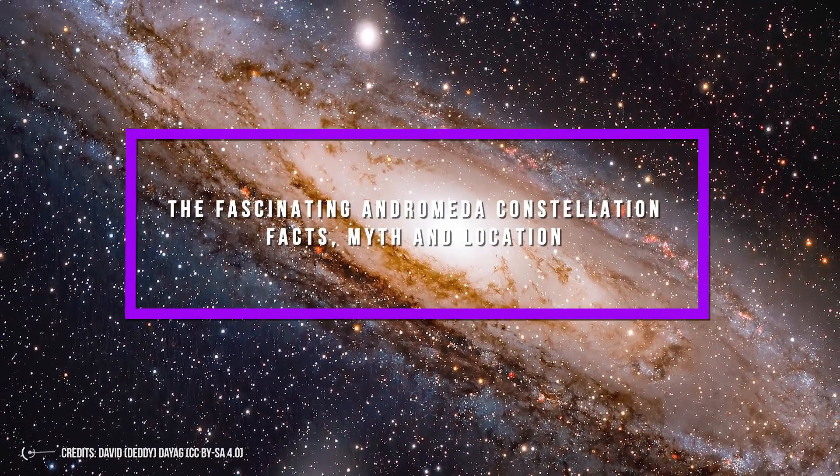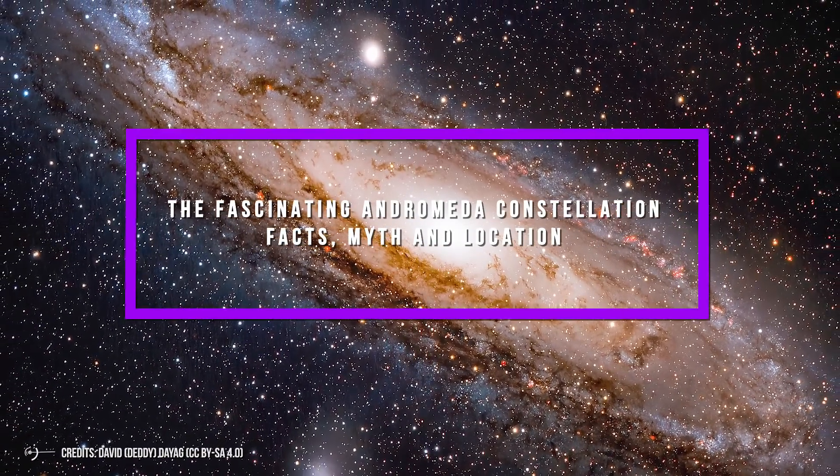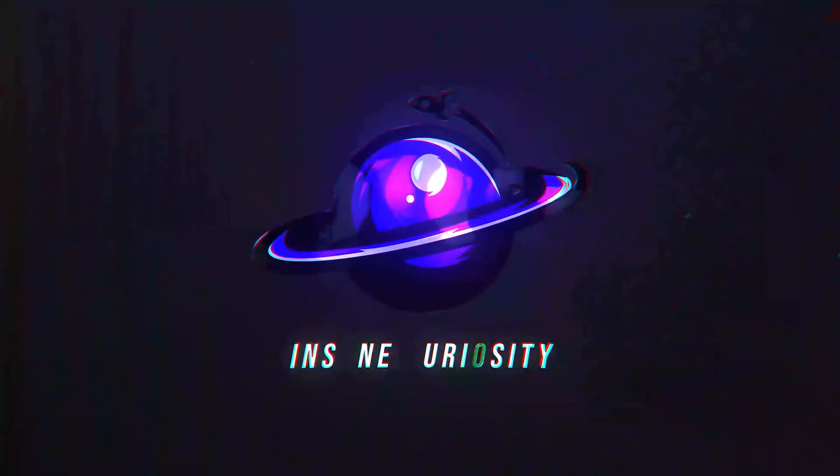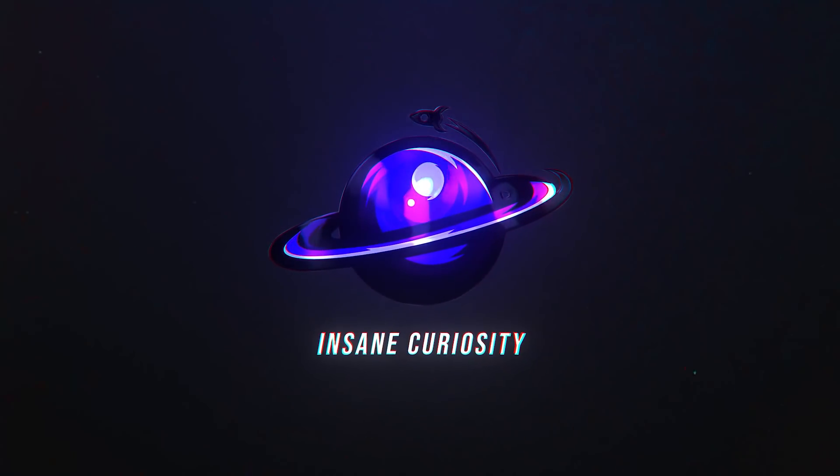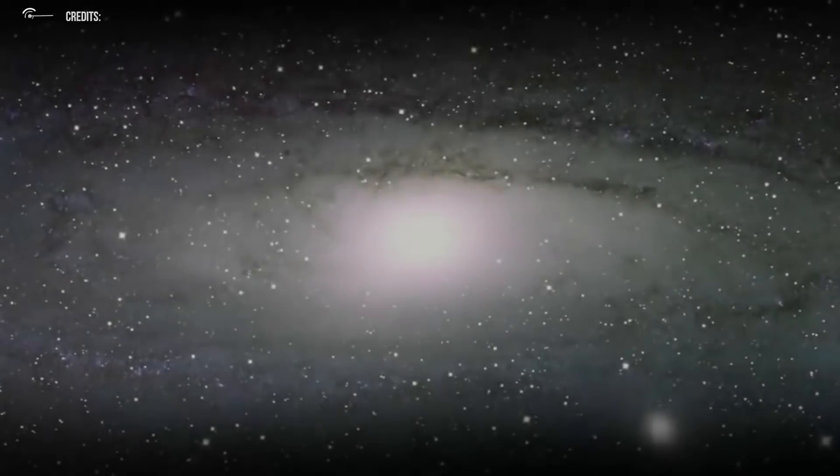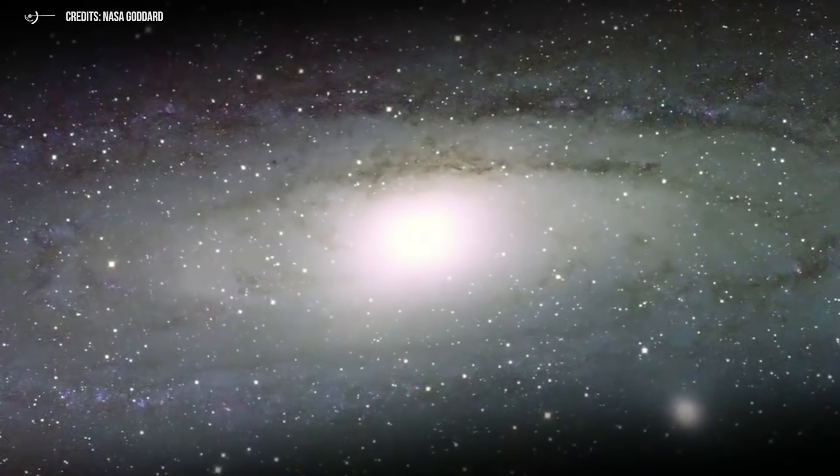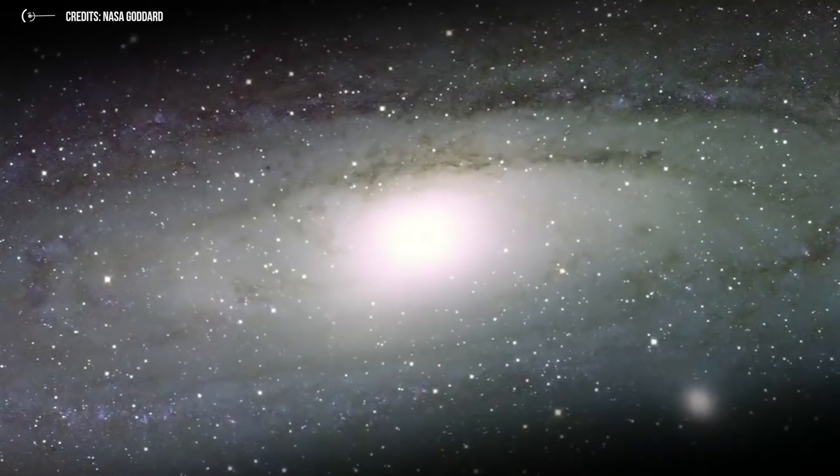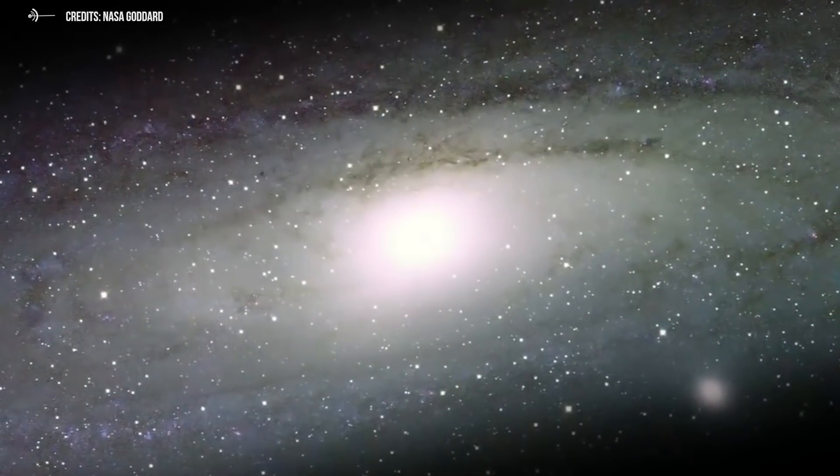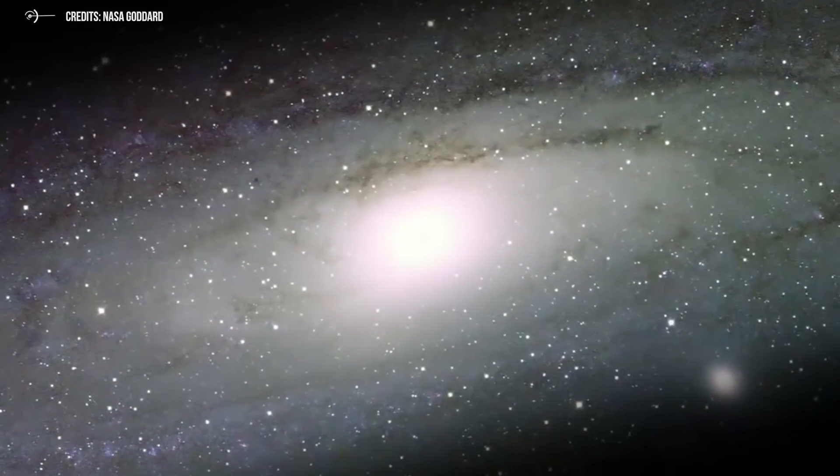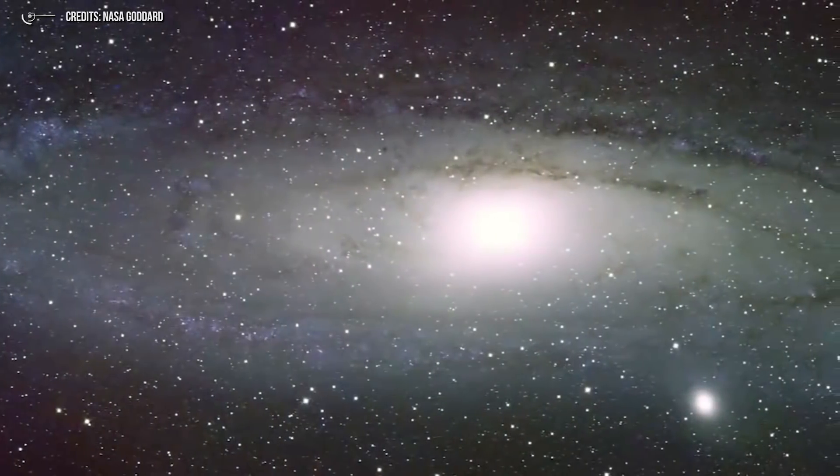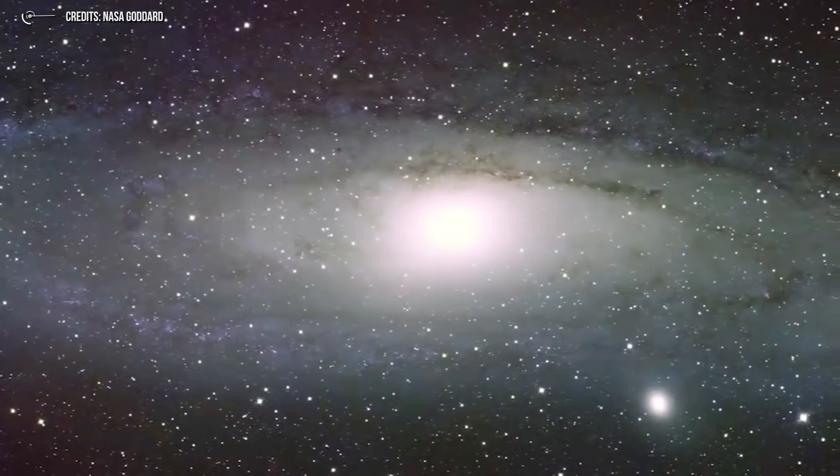The fascinating Andromeda constellation. Facts, myths and location. The Andromeda constellation is made up of 16 stars and is visible in the northern sky. In fact, the constellations you can see depend on where you are located. In short, different latitudes mean different skies.